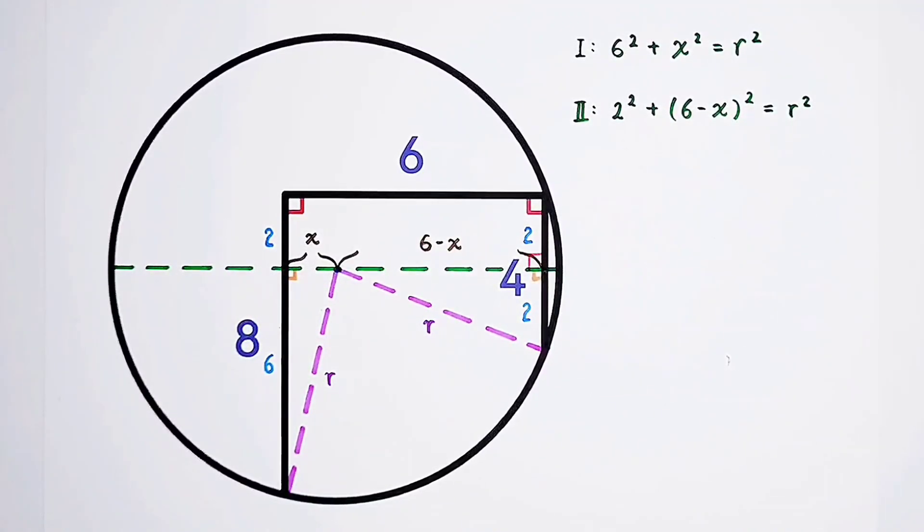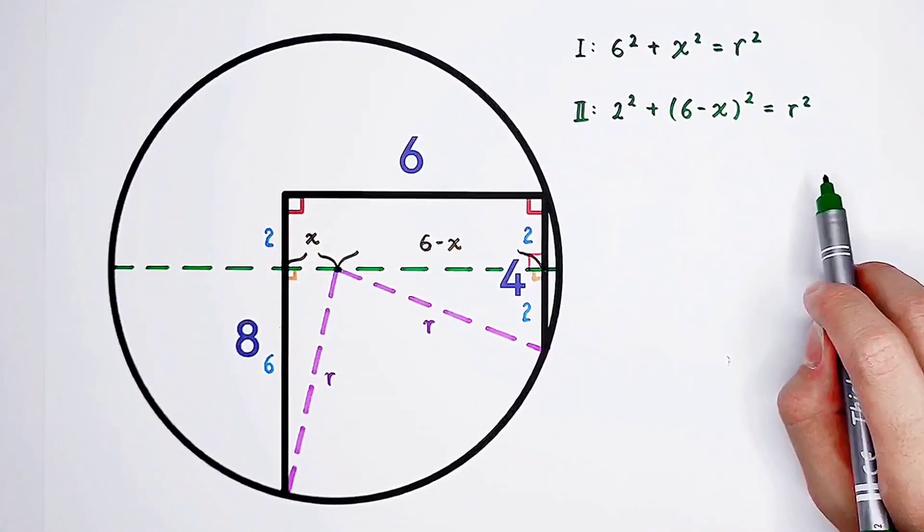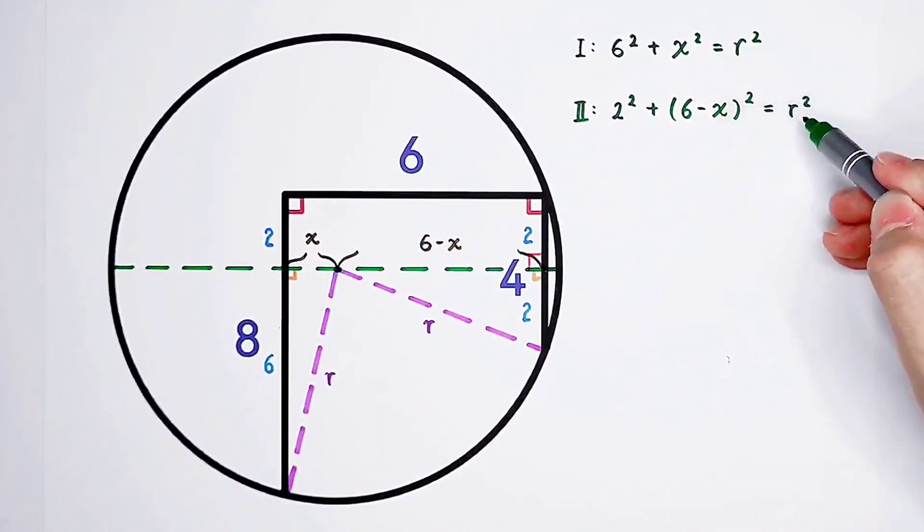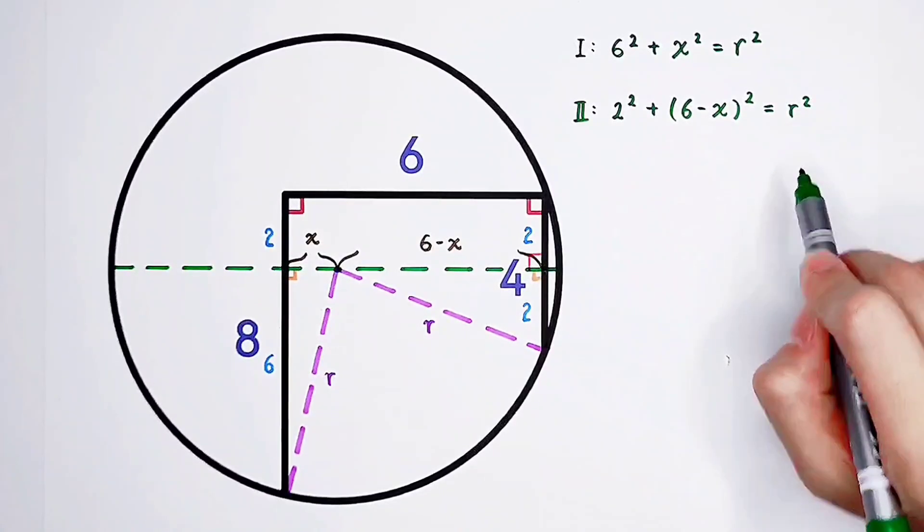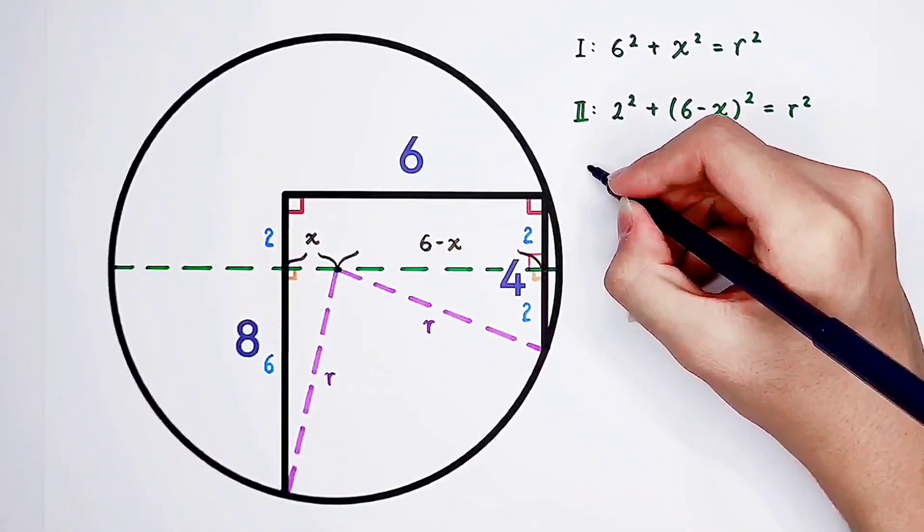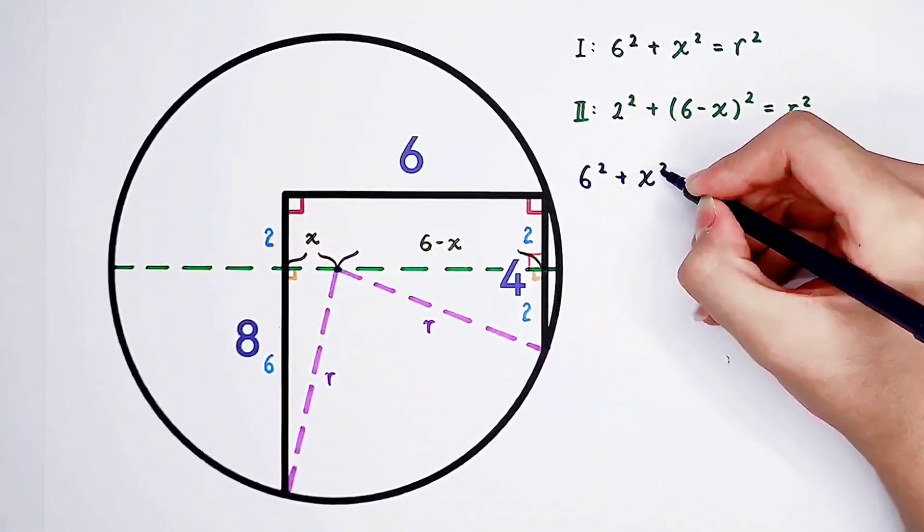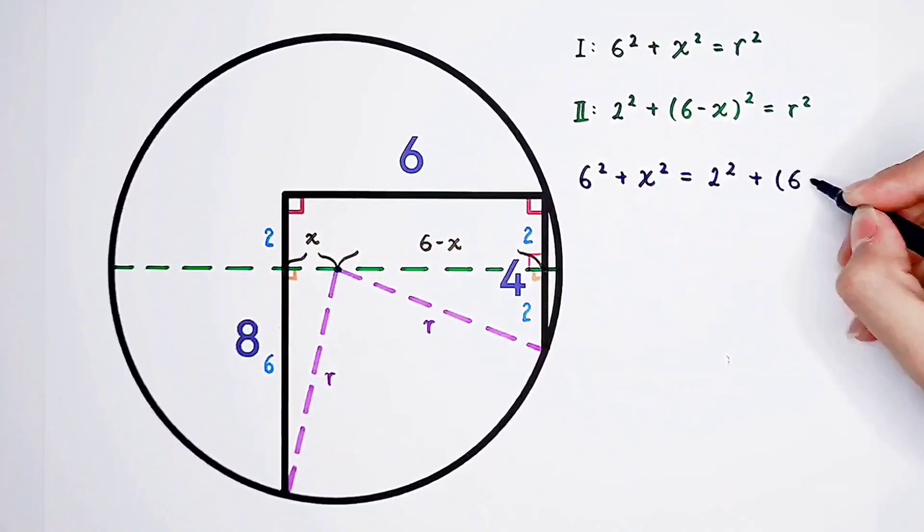How many equations do we have? Two. How many variables do we have? Two. This system of equations is solvable. Substitution, of course. What do we have on the right-hand side? R squared, r squared, they are the same thing. So now, substitution. We can get 6 squared plus x squared is equal to 2 squared plus 6 minus x, all squared.